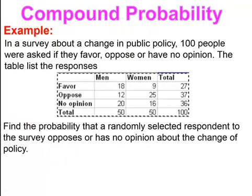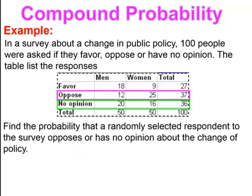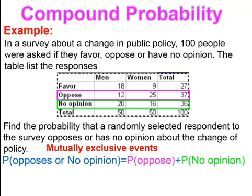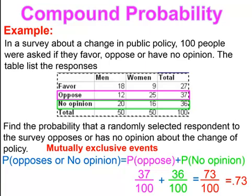Let's do an example. In a survey about change in policy, 100 people were asked if they favored, opposed, or had no opinion. We're asked to find the probability that a randomly selected respondent opposed or had no opinion about the change of policy. These are mutually exclusive because there's no overlap. So the probability of opposed is 37 over 100, plus the probability of no opinion is 36 over 100, giving us 73 over 100, or 0.73, or 73%.